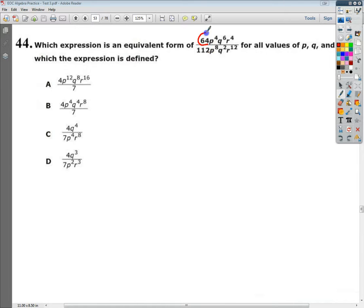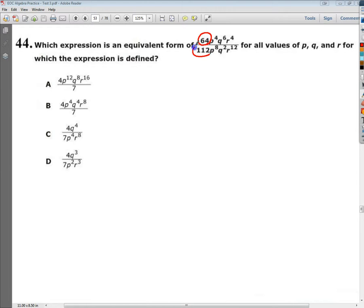We have a number by itself, 64, and then 112 right here. Well, those two numbers we can reduce. When we reduce those, both of those numbers will divide or reduce by 16. 64 is going to become a 4, because 64 divided by 16 is 4. And then we're going to reduce the 112 by 16, and that's going to become a 7. So somewhere we need to have a 4 on the top and a 7 on the bottom. We've dealt with our numbers. They're gone. Let's get rid of them.